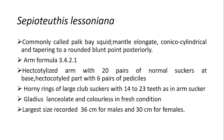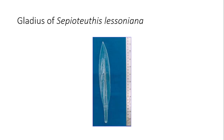Moving to Sepiotuthis lesiana taxonomical key characters: commonly called the park squid. The body is elongate, conico-cylindrical, tapering to a rounded blunt point posteriorly. The arm formula is 3-4-2-1, with heterocotylized arms bearing 20 pairs of normal suckers at the base, and the heterocotylized part having six pairs of pedicels. The horny rings on the club suckers have 14 to 23 teeth. The gladius is lanceolate and colorless in fresh condition. The maximum size recorded is 36 centimeters for females and 30 centimeters for females. This is the gladius portion of Sepiotuthis lesiana.